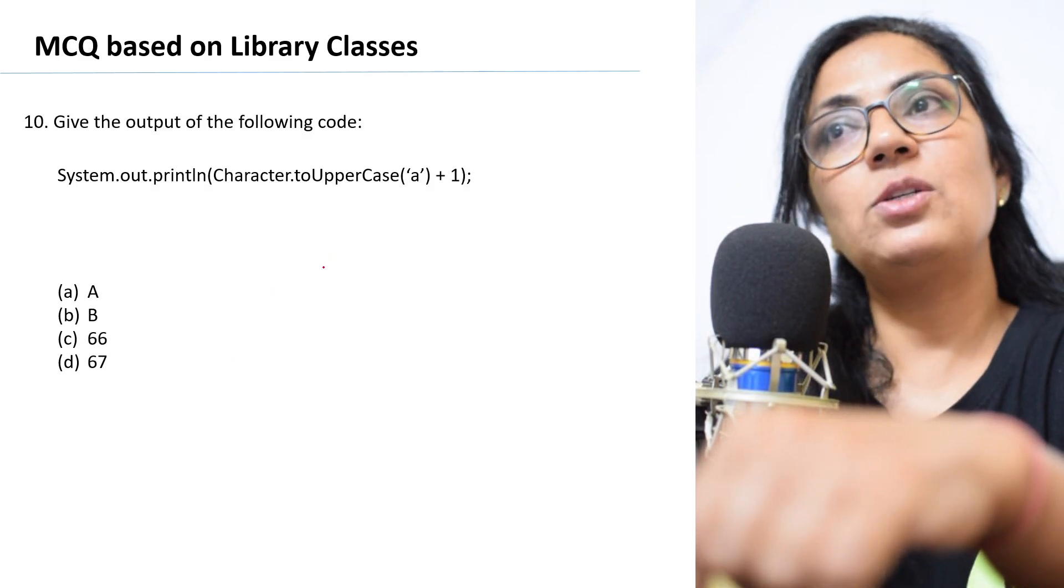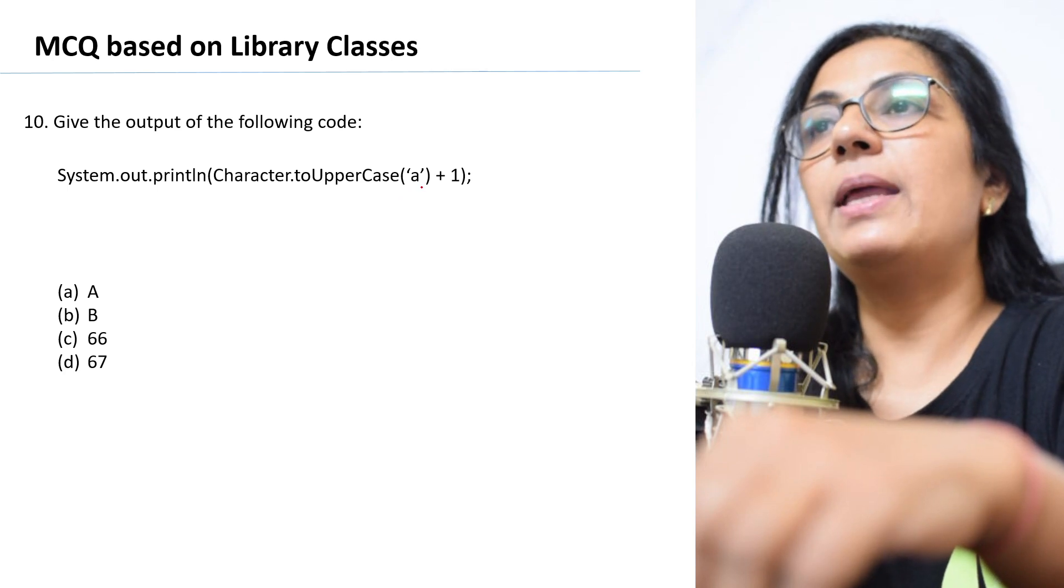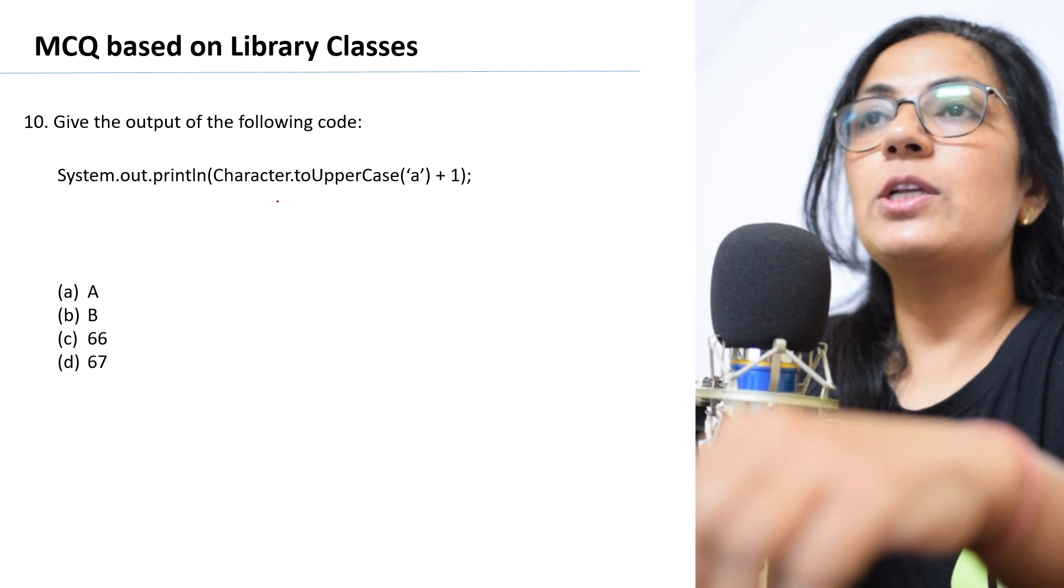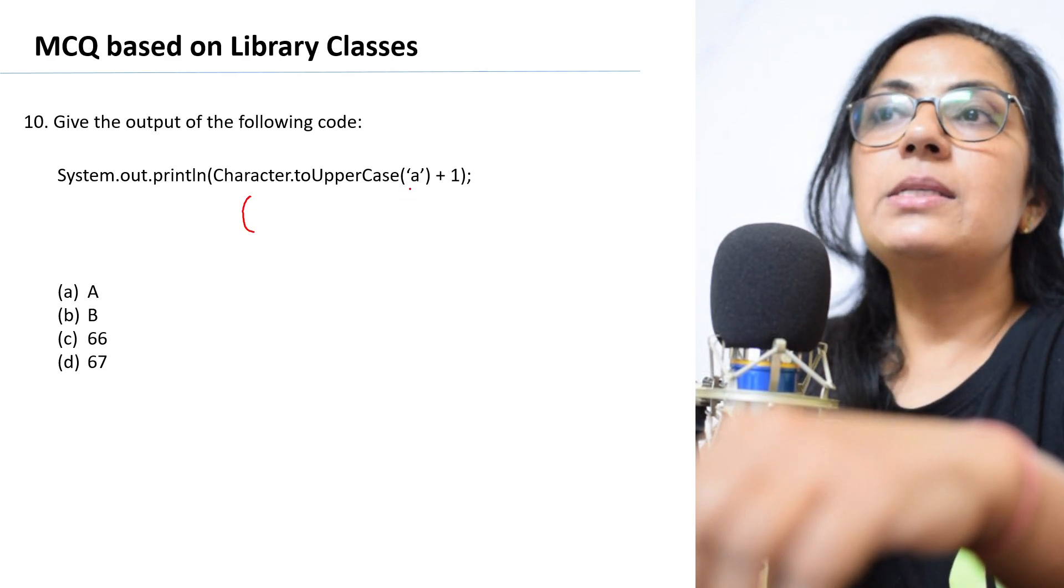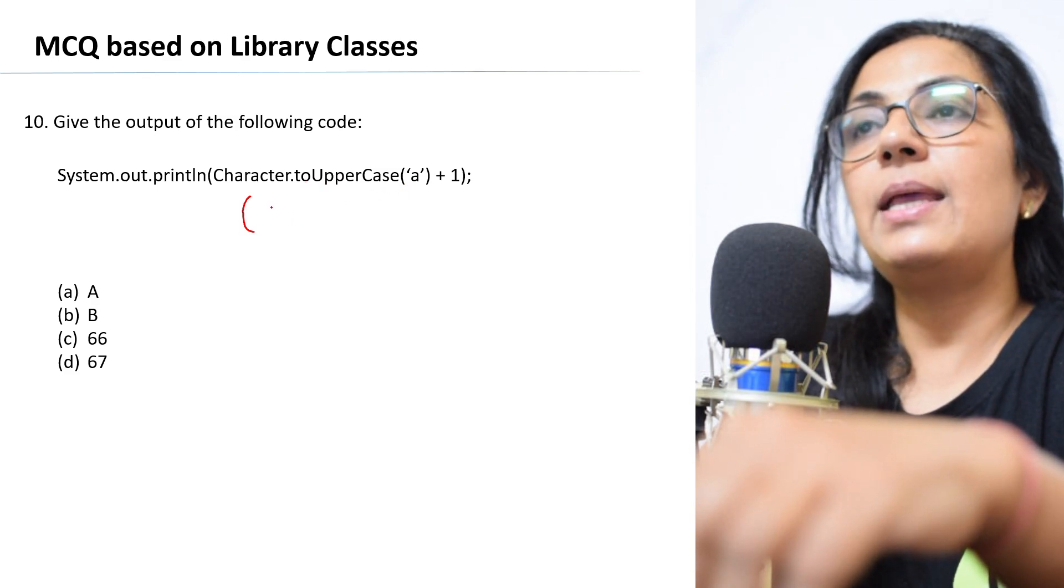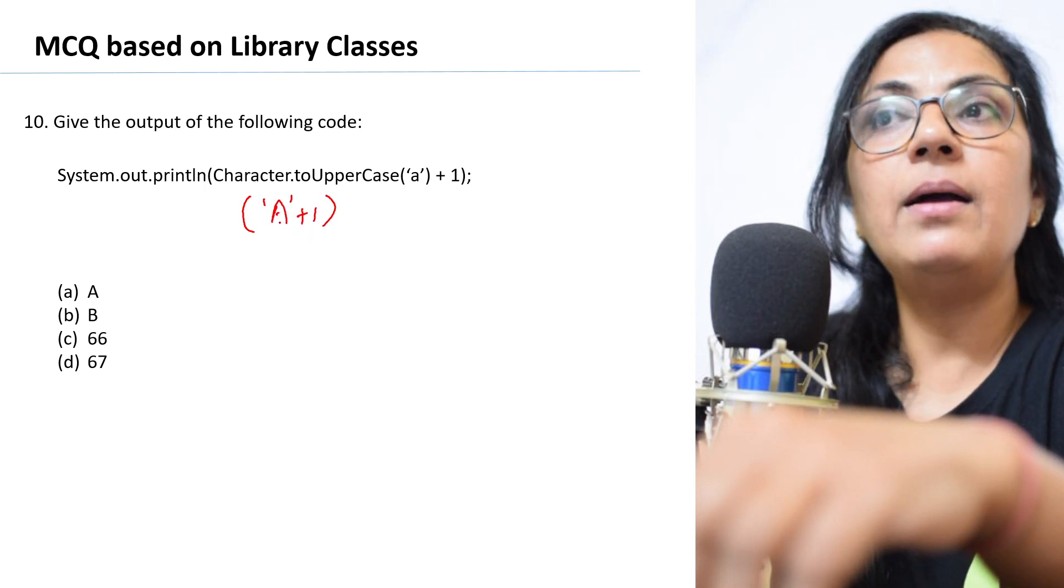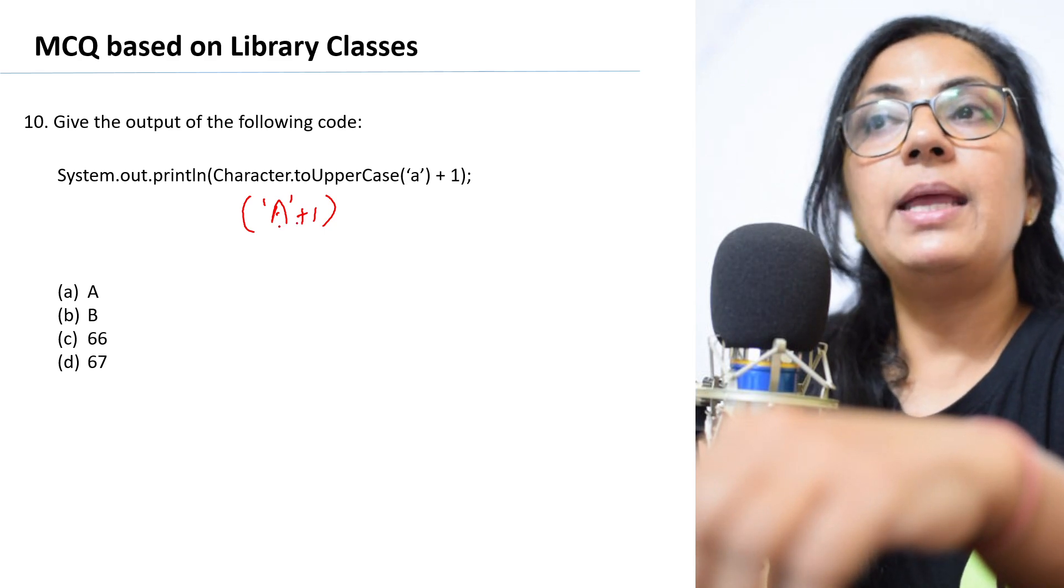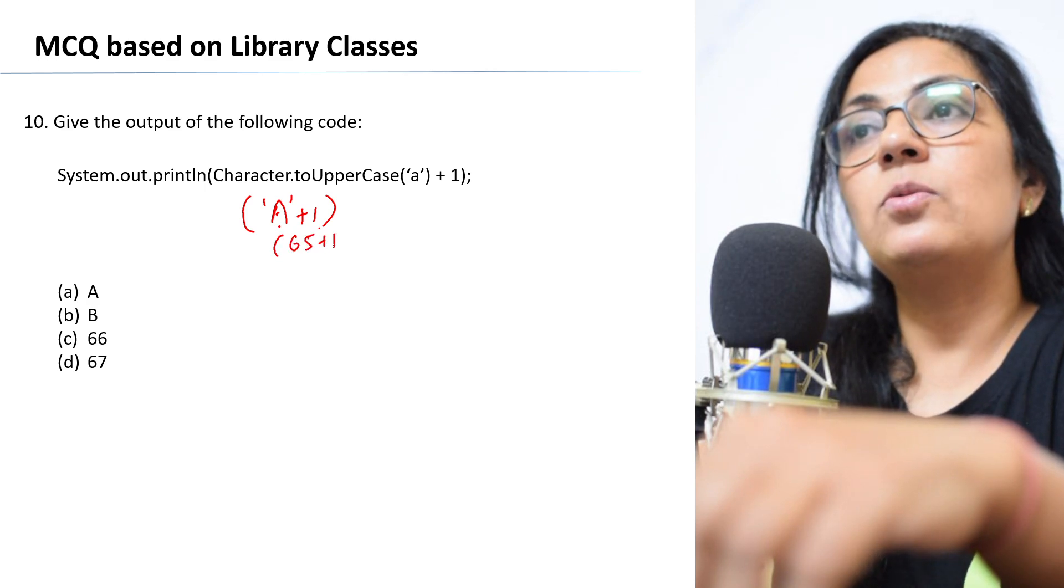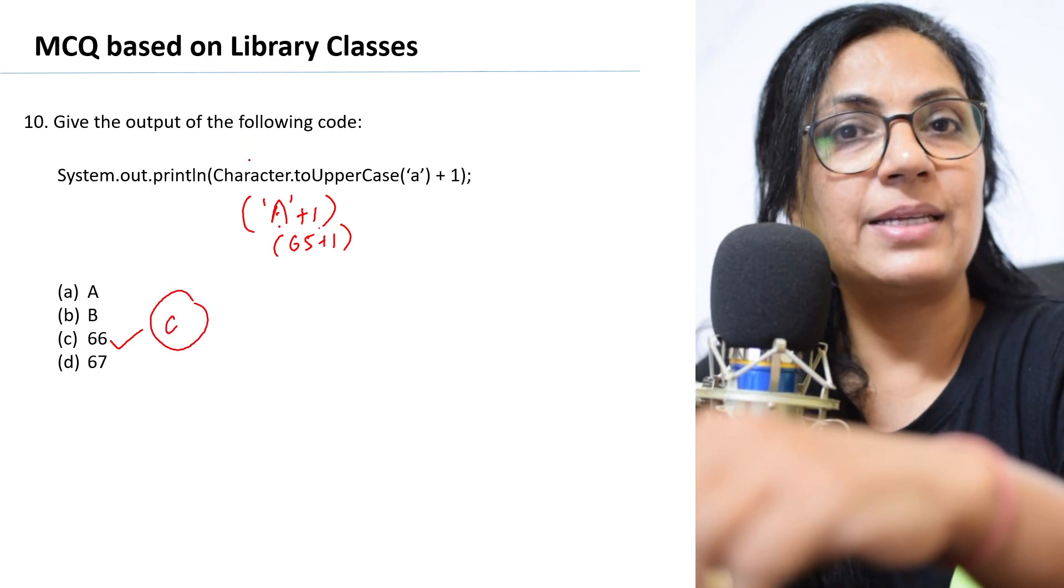Next we have the last question today. System.out.print character dot toUpperCase small case a plus one. toUppercase is a function which converts the given lowercase letter into uppercase. So toUppercase of lowercase a will be A plus one. What will happen here? The ASCII value of capital A will be added, and that is 65 plus one. So the output will be 66. That is option C is the correct answer.